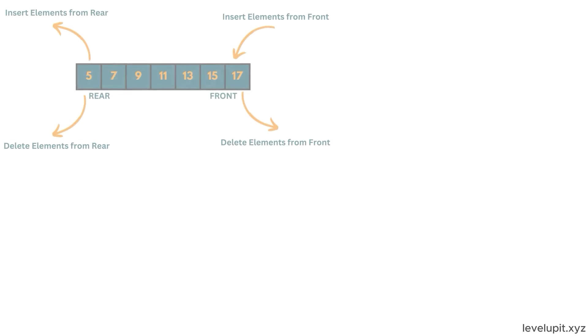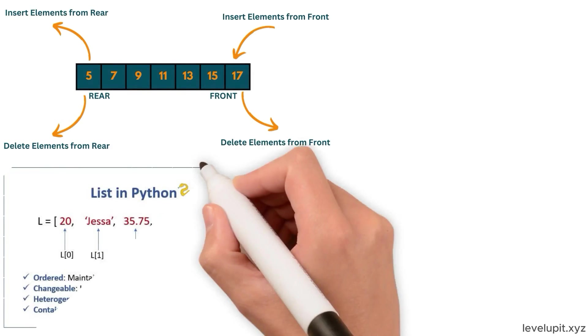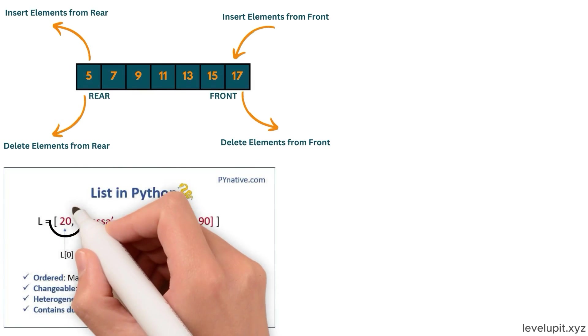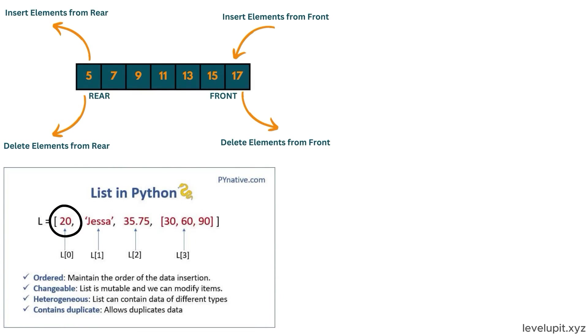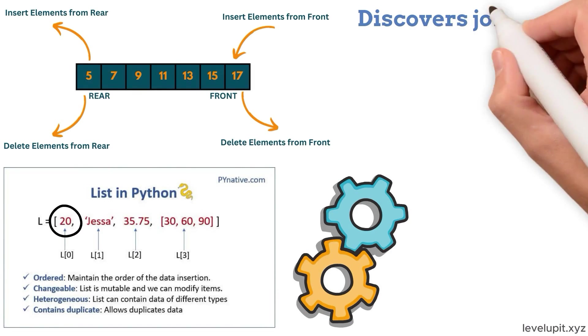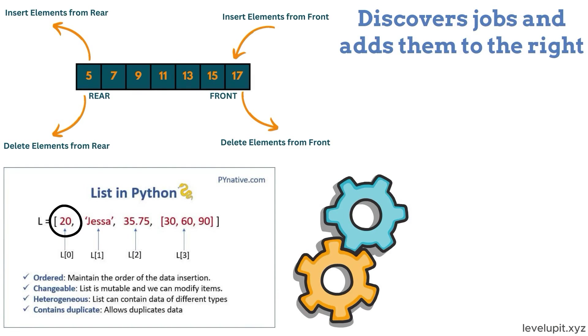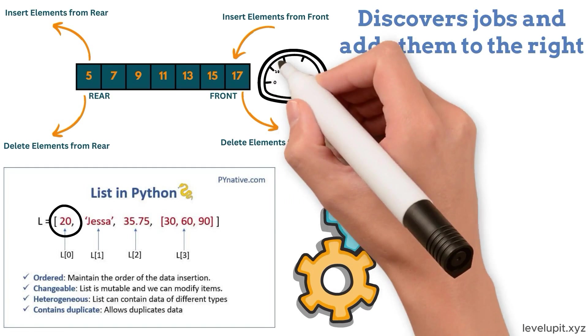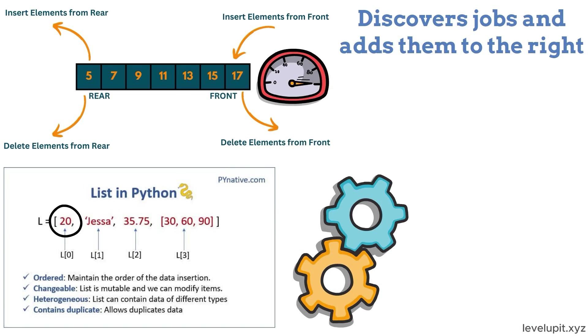A deque is a double-ended queue that allows fast appends and pops on both ends. If a list is used as a queue and the program often removes from the front, performance suffers. A deque fixes that. Imagine a processing pipeline that discovers jobs and adds them to the right while a worker picks the next job from the left. The deque stays fast no matter how long the queue gets. It's also useful for sliding windows, like keeping the last n events to compute a rolling average.